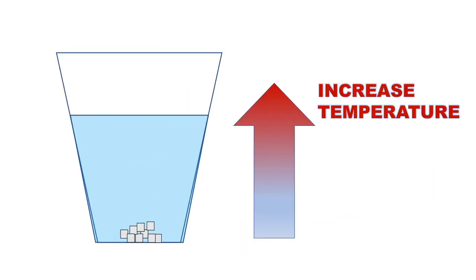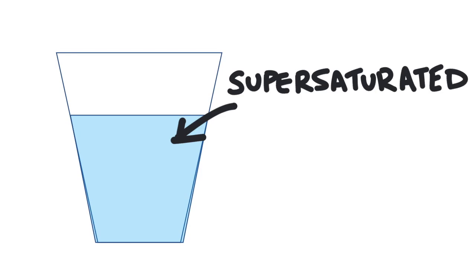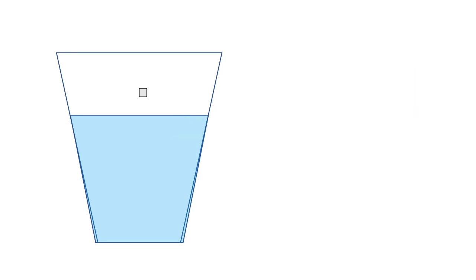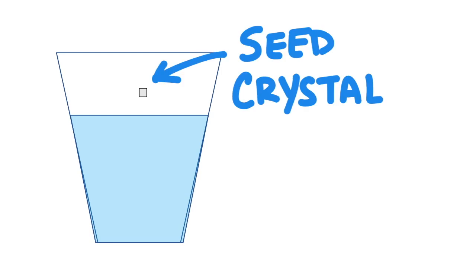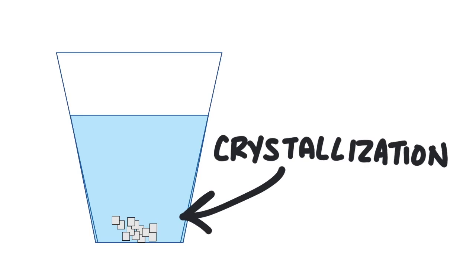All that extra solute is ready to come back out of the solution and turn solid again, or in other words, it's ready to crystallize. For crystallization to occur, we need something to get things started, like a seed crystal. A seed crystal is a solid piece of the solute that will encourage the excess dissolved solute to turn back into solid. It's almost like the excess dissolved solute needs to be reminded of what it looks like to be solid.